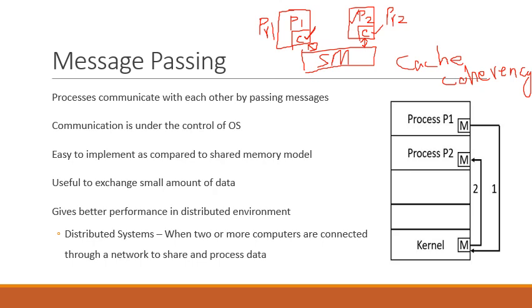In the message passing scheme, messages are exchanged between processes. There is no storage of these messages in a shared memory area. Rather, processes communicate directly by exchanging messages, which are not stored in a shared memory region because there is no shared memory region. Hence, it is easy to implement compared to the shared memory model. Moreover, message passing is useful for exchanging small amounts of information. When data is large, the shared memory scheme is easier and more useful. However, when messages are small, message passing is better.